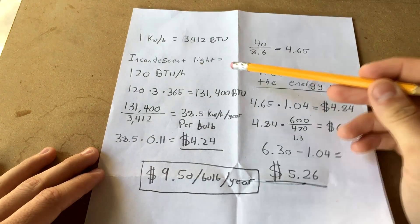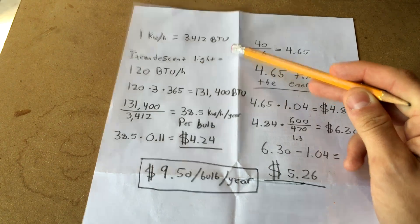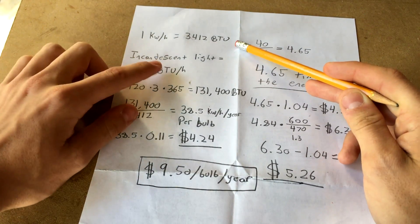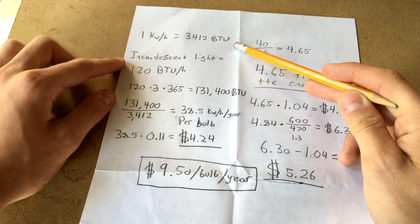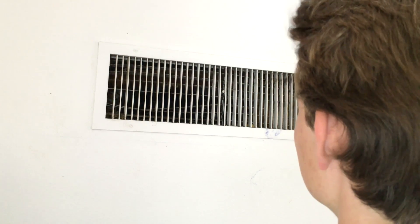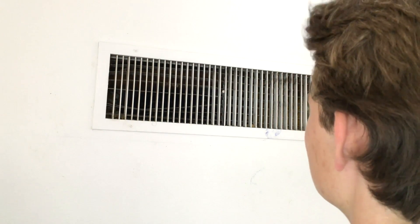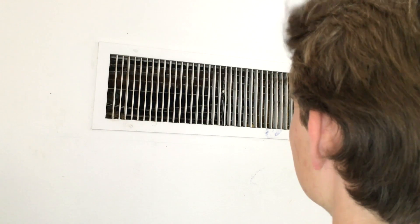Now if you're like me and you live in a state which requires perpetual air conditioning like Florida, you also have to pay for the electricity cost in air conditioning these mini space heaters, which is so ridiculous. So 1 kilowatt hour is equal to 3,412 BTUs, we do some math, and it comes out to $4.24 a year to air condition these bulbs per bulb.